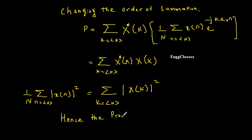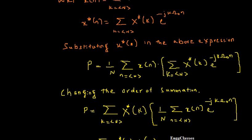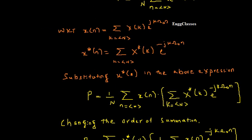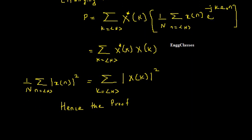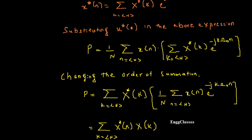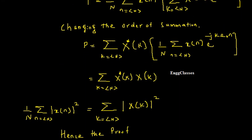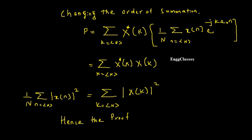So this is the statement and the proof of Parseval's theorem — one of the very important properties of discrete time Fourier series. I have explained this step by step. I hope you have understood. If there are any doubts, please let me know in the comment section and I will definitely address those doubts. Meanwhile, subscribe to our channel NJ Classes for more videos in signals and systems. Till then, thank you everyone for watching.